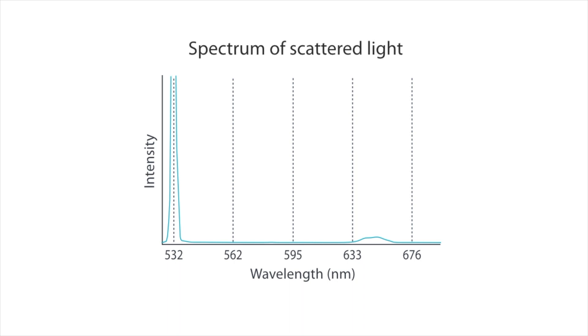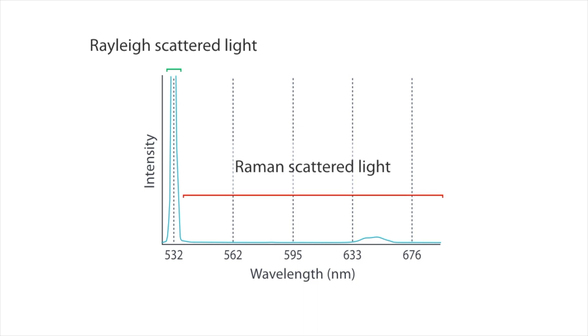This is the spectrum of scattered light from the sample. Because we are using a 532 nanometer excitation wavelength, we can detect both strong Rayleigh scattered light at 532 nanometers and weak Raman scattered light at a longer wavelength.